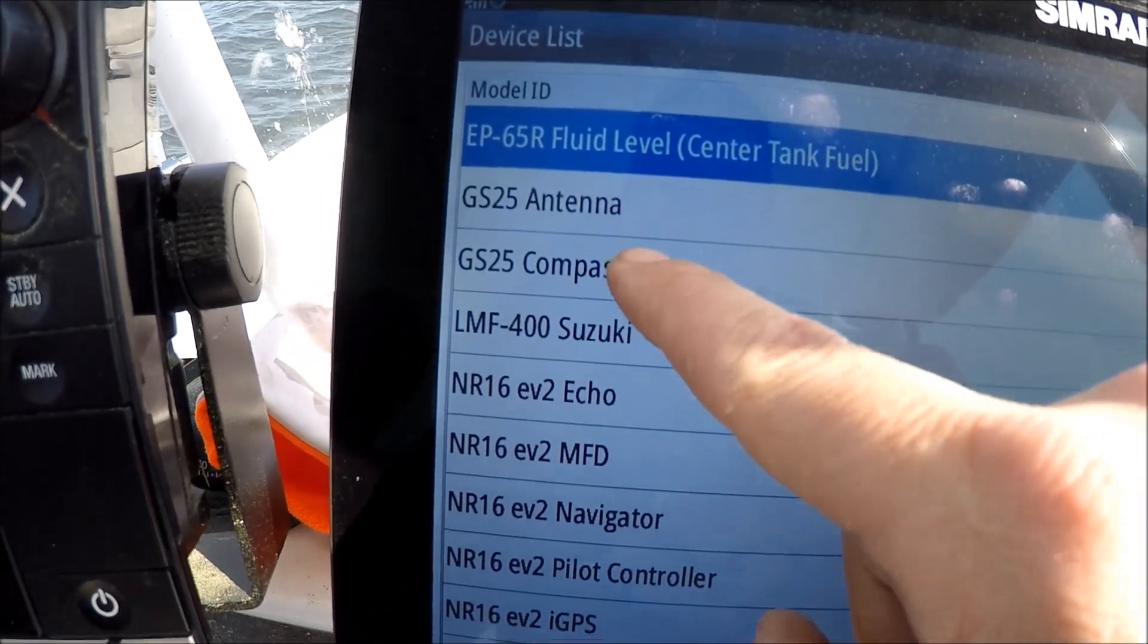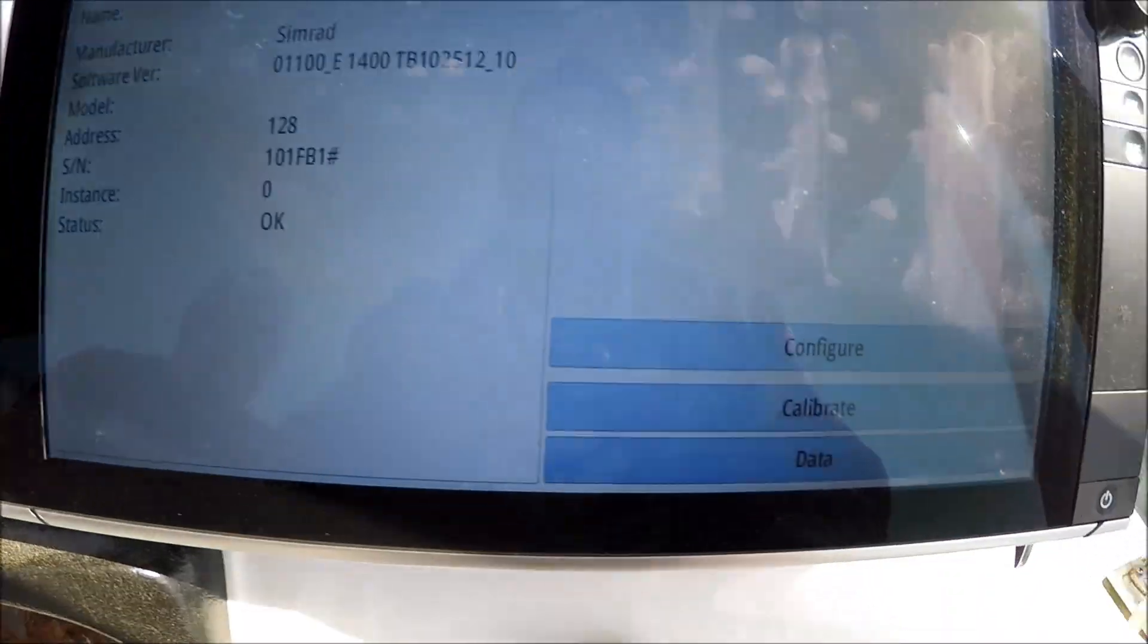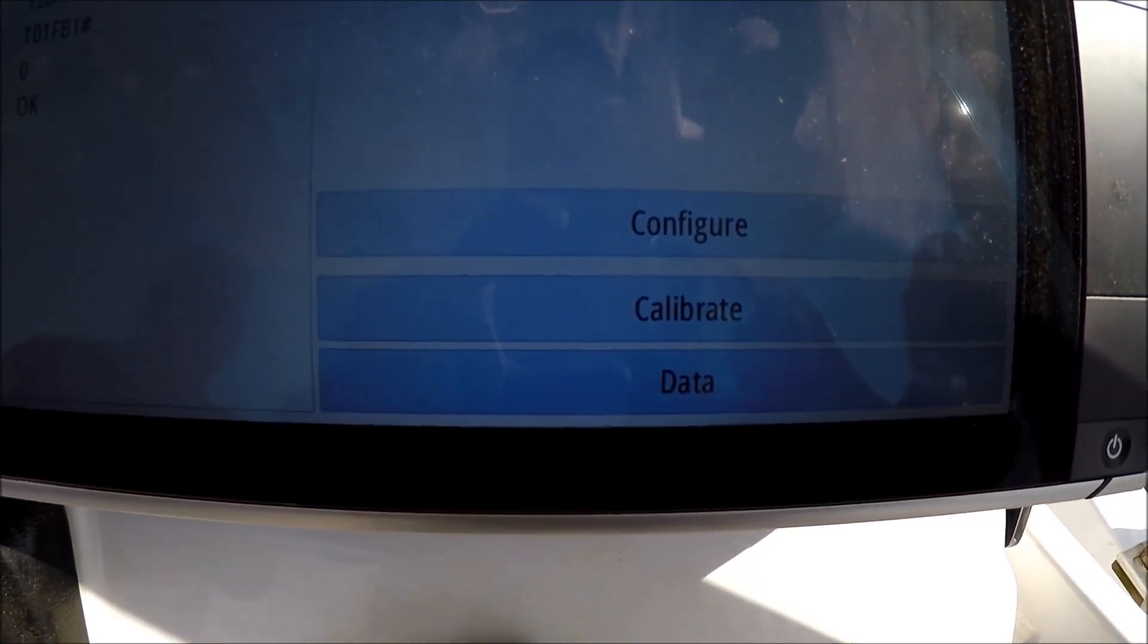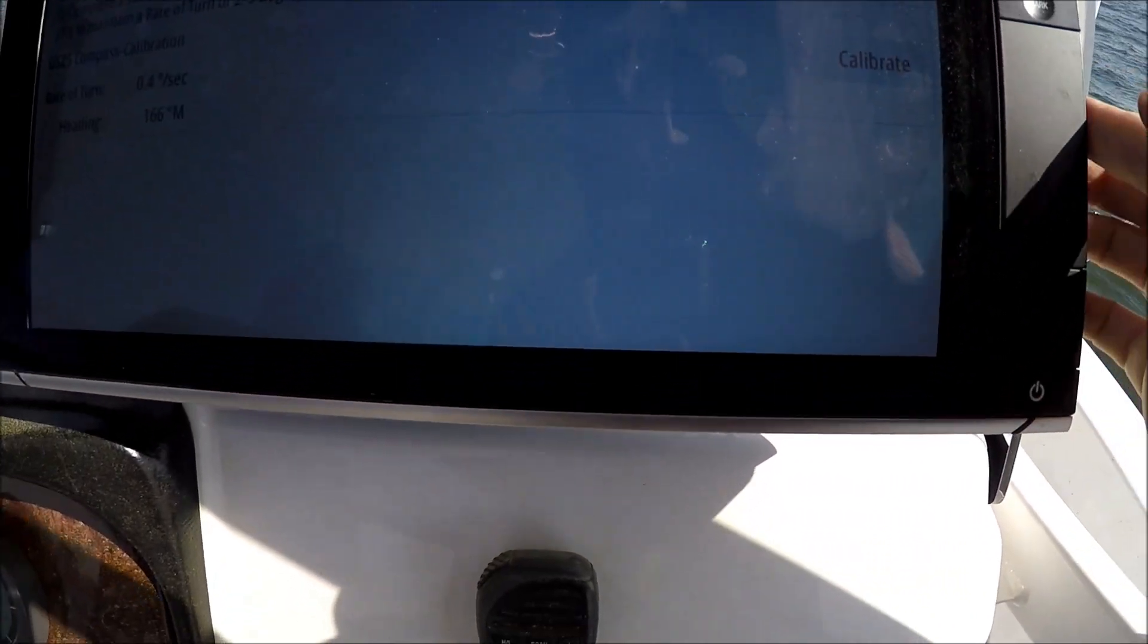Here's the GS25 antenna and compass. There's two built in, one. I'm going to hit the compass. You can see it says Configure, Calibrate, Calibrate.